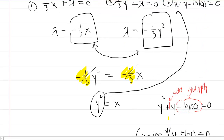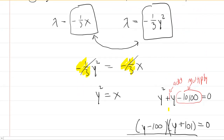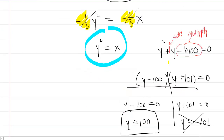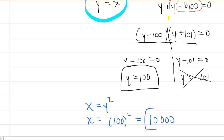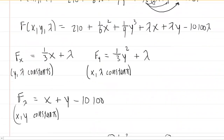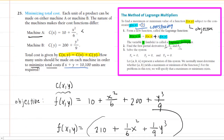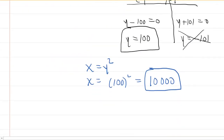To get x, we recall that x = y², so x = 100² = 10,000. Just a reminder: it was machine A manufacturing x units and machine B manufacturing y units. So machine B will be manufacturing 100 units, and machine A will be manufacturing 10,000 units.